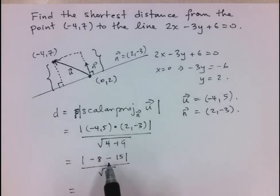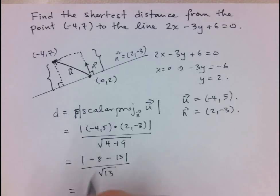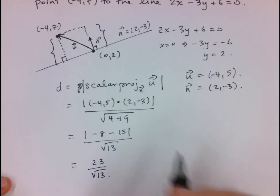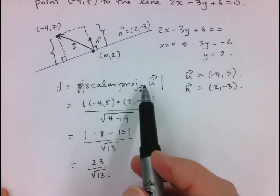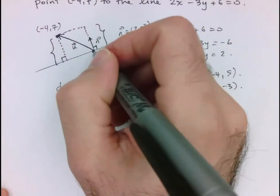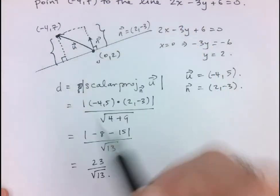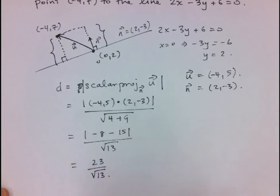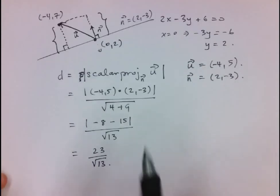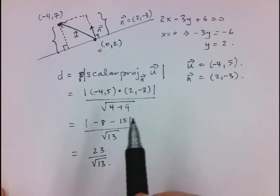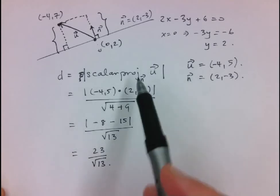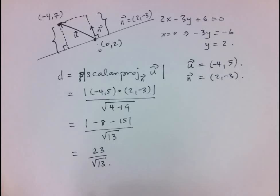So we have negative 4 times 2 is negative 8, plus 5 times negative 3 is minus 15, over the square root of 13. That leaves us with negative 8 minus 15, which is negative 23. Since we're taking the absolute value, that's positive 23 over root 13. This shows why we need the absolute value — the scalar projection can sometimes be negative. So we can use the scalar projection to determine the distance between a point and a line, which is significantly less work than the grade 10 method. But we can actually go even further and make this even simpler.